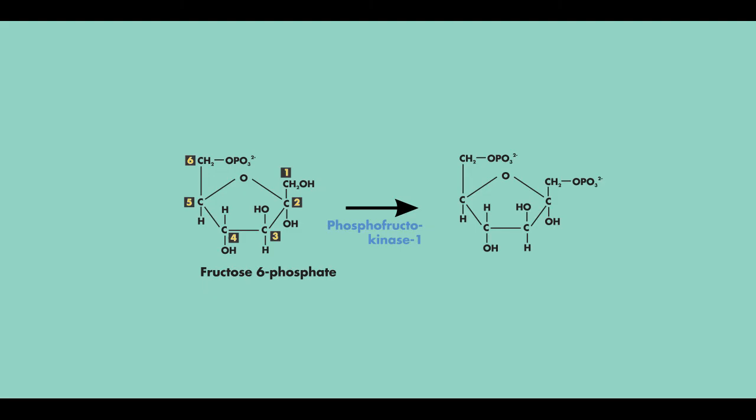The phosphate molecule again comes from ATP and is attached to the first carbon of the substrate, creating fructose 1,6-bisphosphate, because now we have a phosphate molecule at both the first and the sixth carbons. This is the last energy-requiring step of glycolysis, and the last step of the preparation or investment phase.